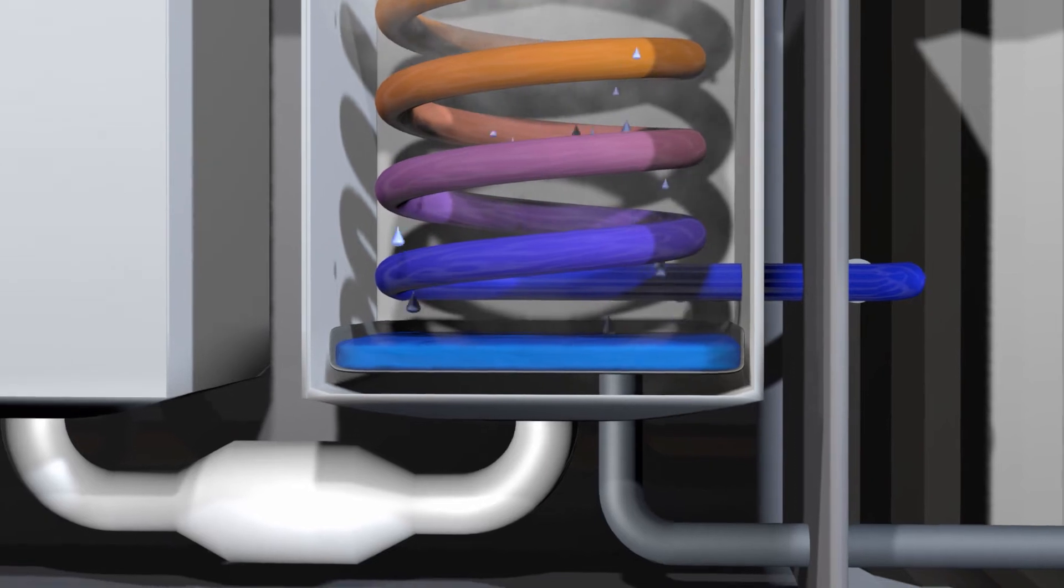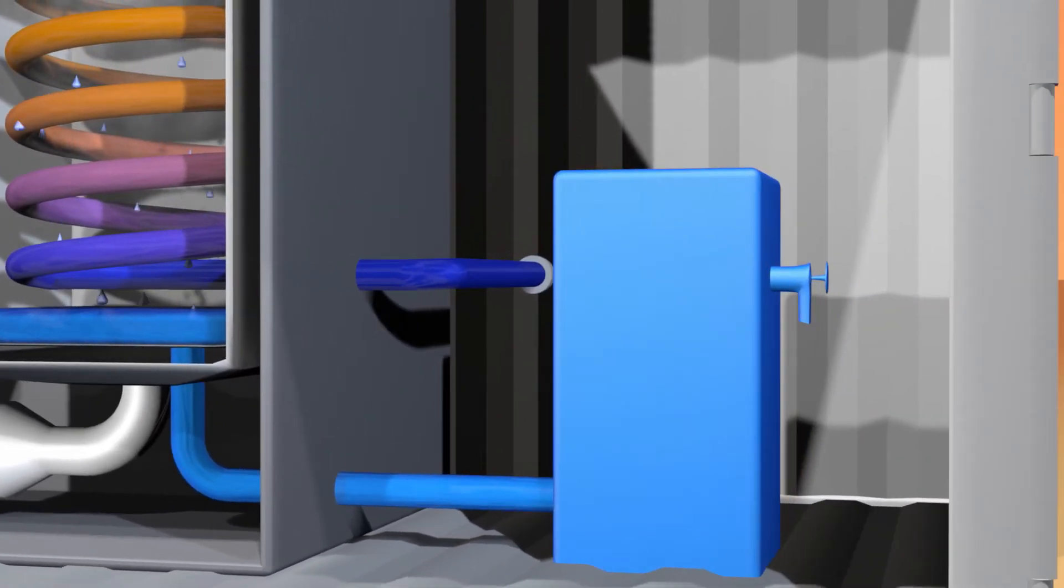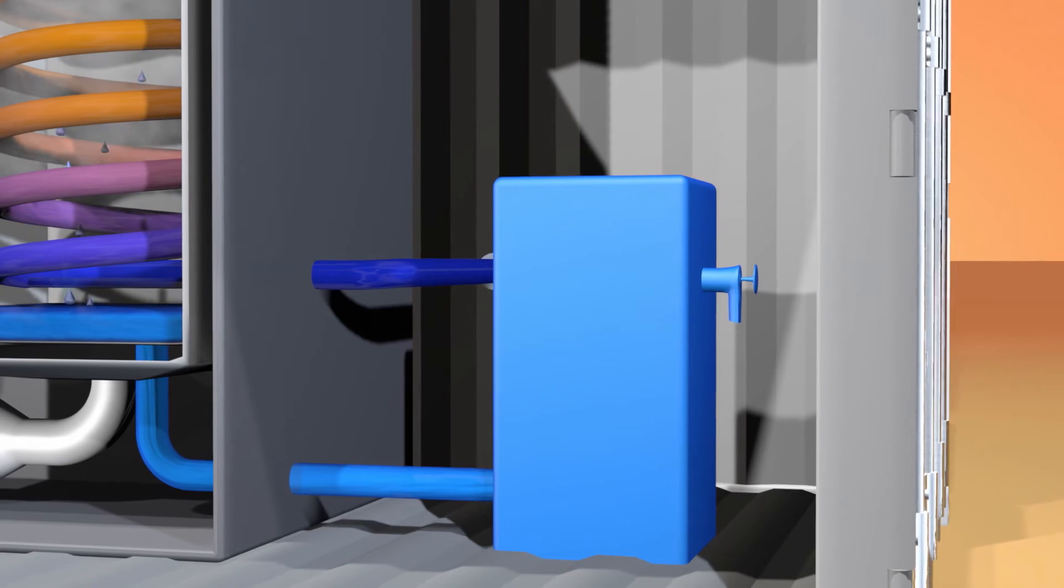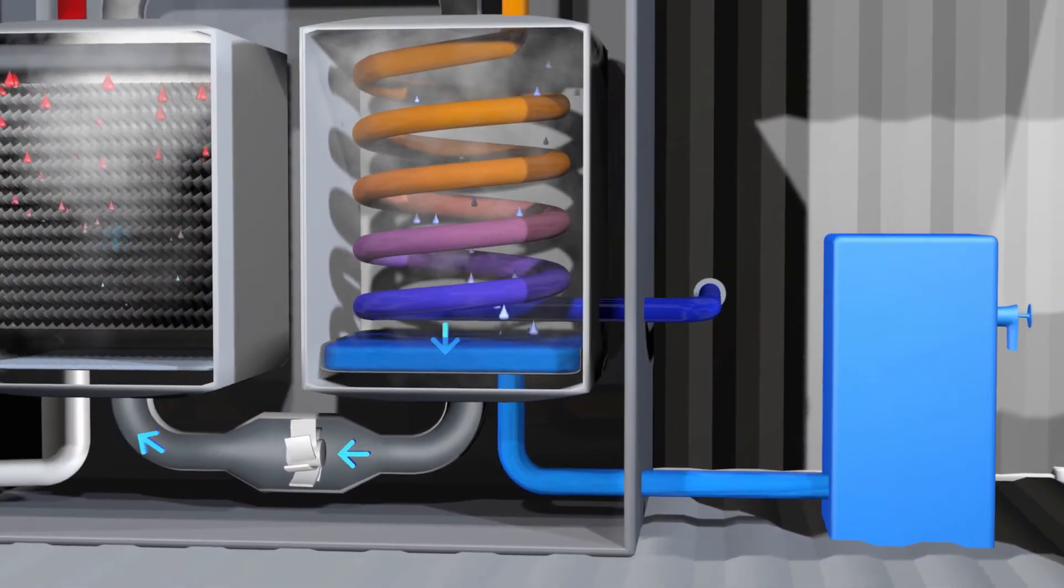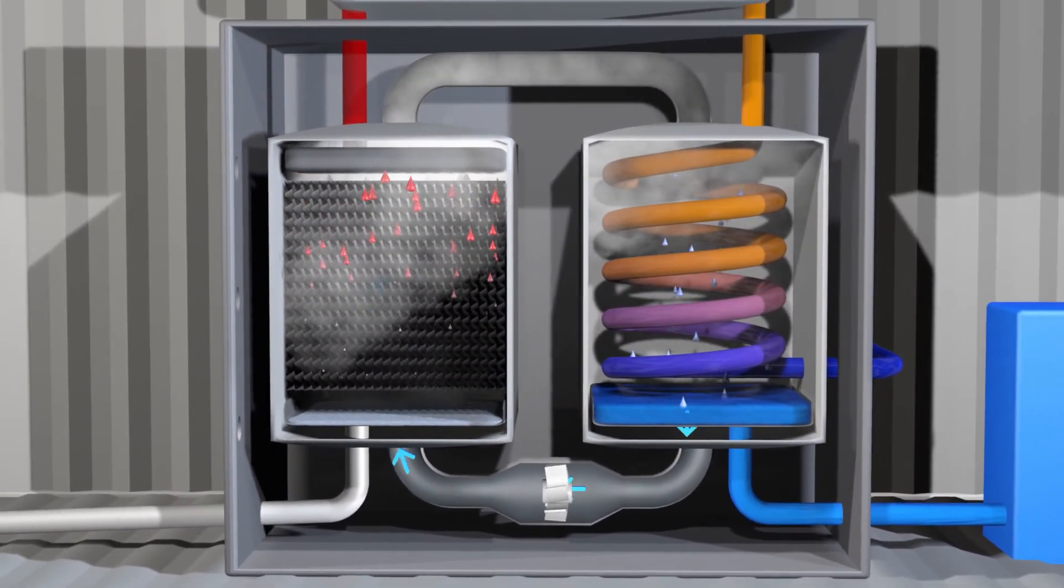The condensate is collected in a tank and is available as drinking water. The cooler air re-enters the humidifier. The cycle starts anew.